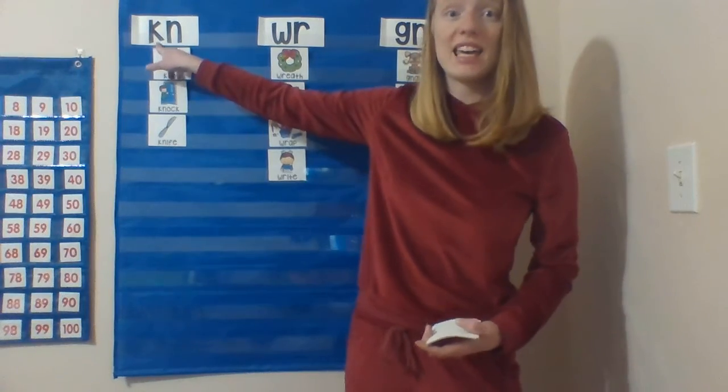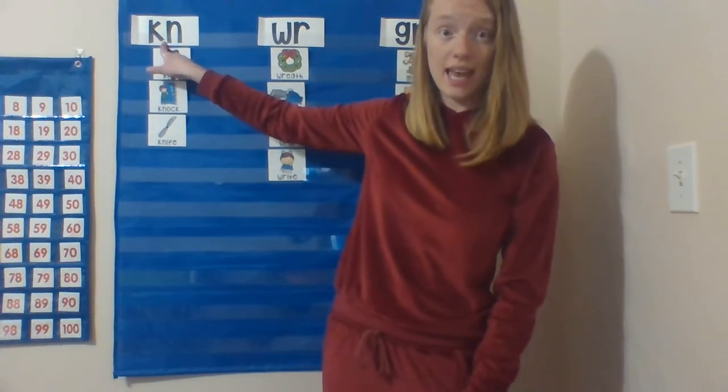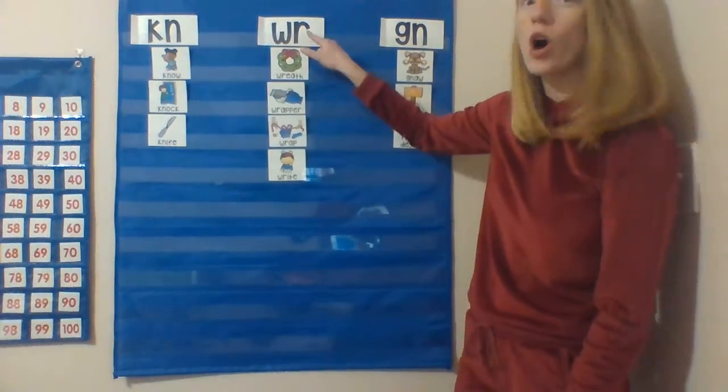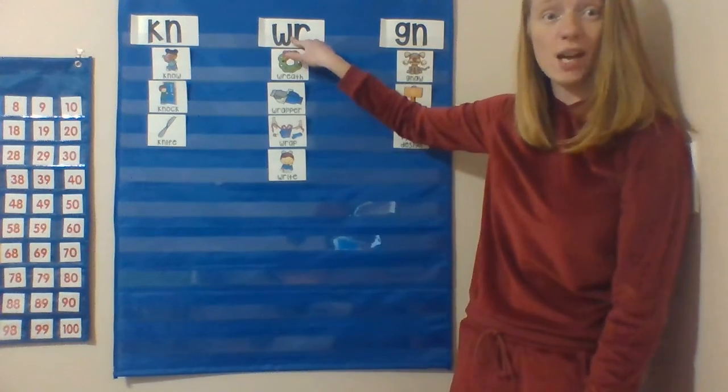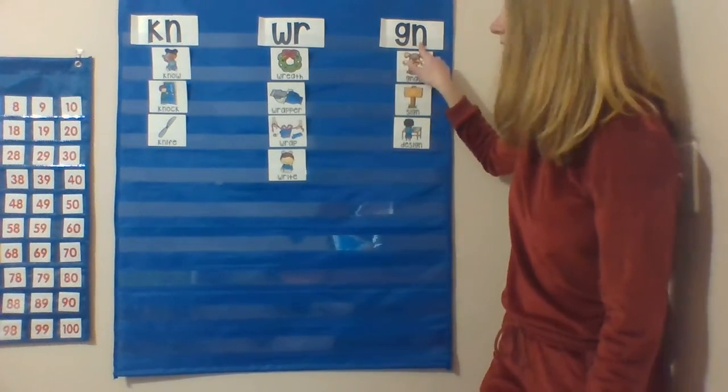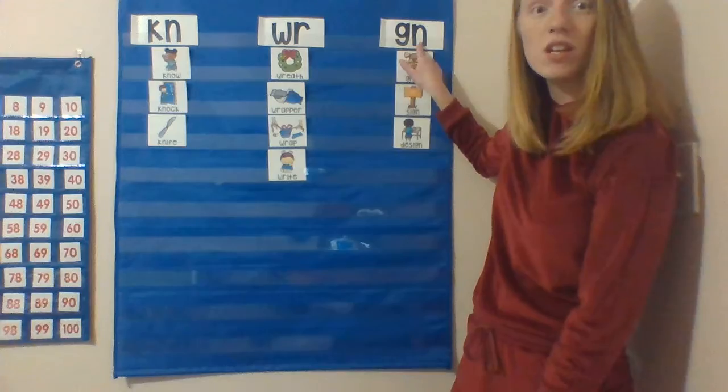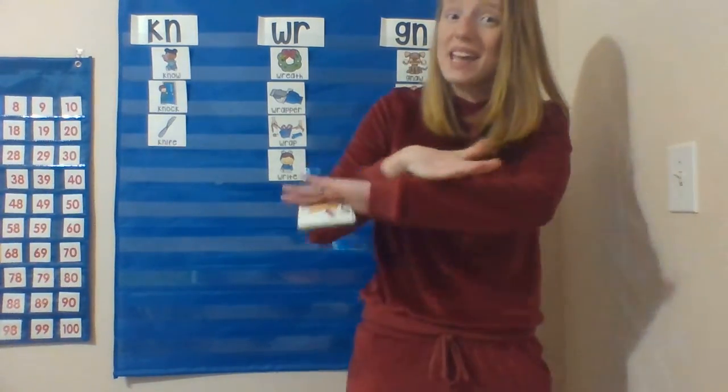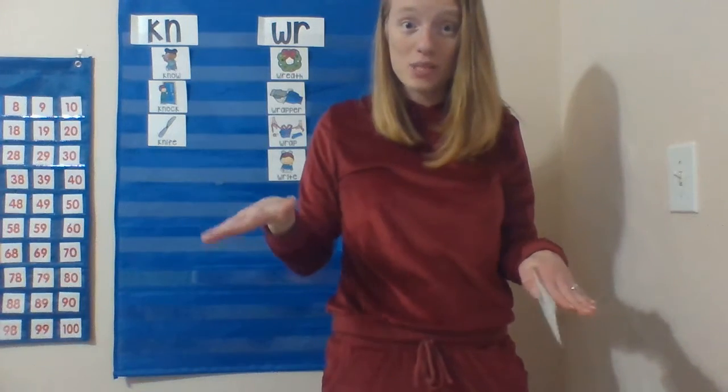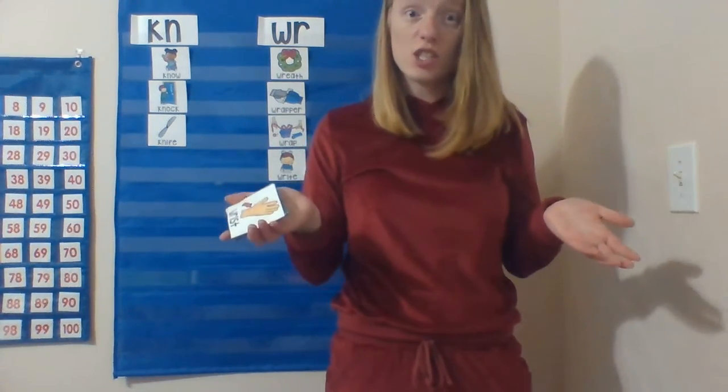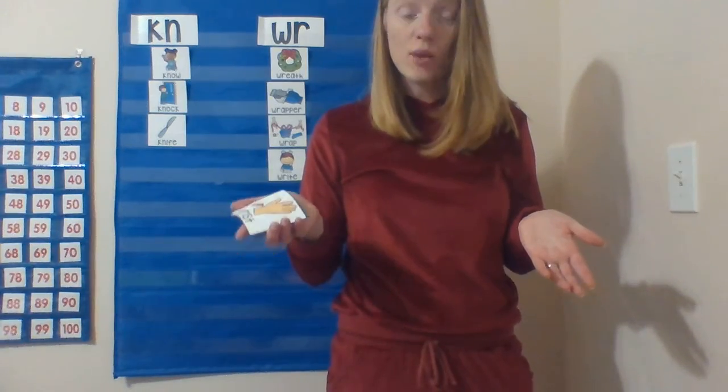Okay, so your job is to know that KN makes the N sound because the K is a ninja, WR makes the R sound because the W is a ninja, and GN makes the N sound because the G is a ninja. Ninja letters do not make any sounds. We're going to practice more with this later this week, but this is just for you to practice reading some of those words. Have a great day, friends!